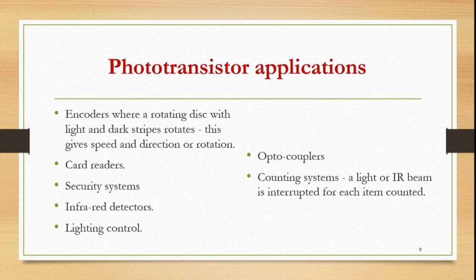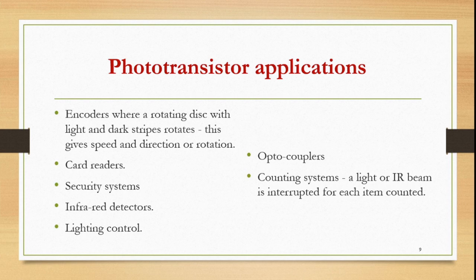There are numerous applications of the phototransistor. In encoders, a rotating disk with light and dark stripes gives speed and direction of rotation. They are also used in card readers, security systems, infrared detectors, lighting controls, optocouplers, and counting systems where a light or IR beam is interrupted and each interruption is counted. In summary, the phototransistor is a sensor and electronic device with numerous applications.